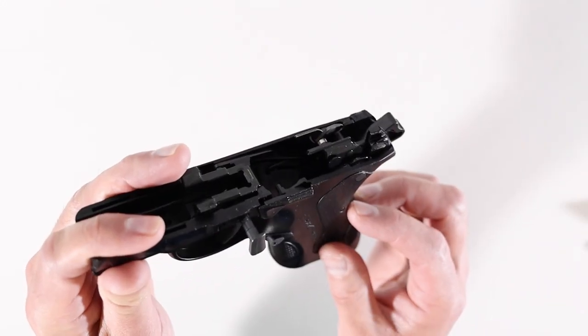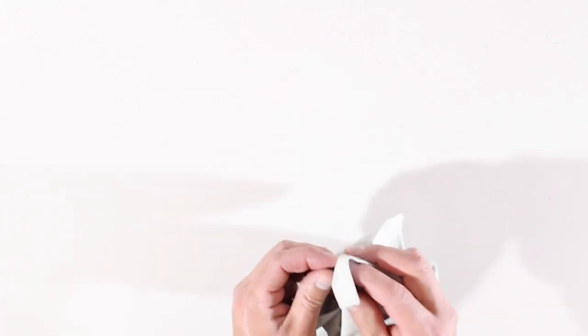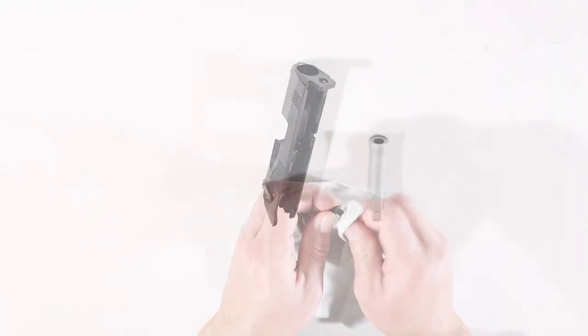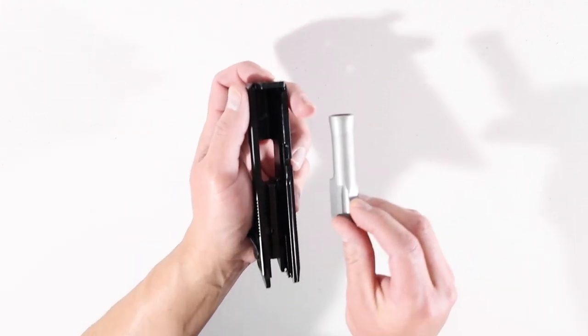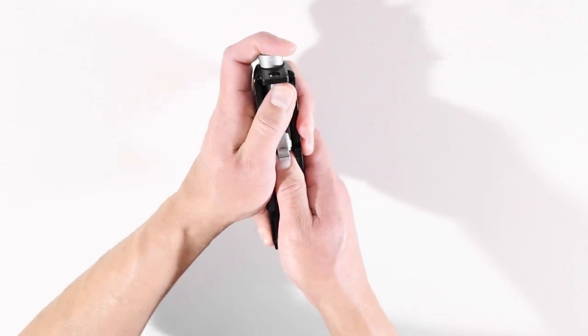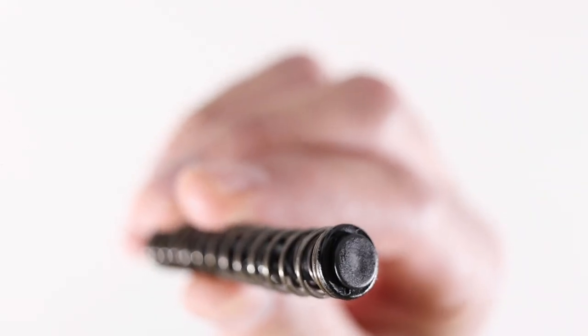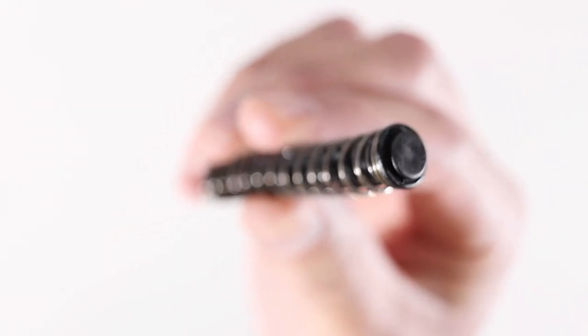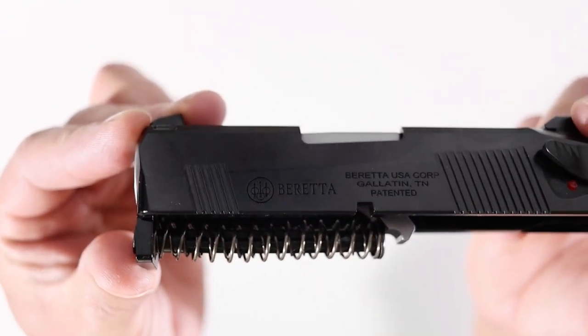Earlier, when I field stripped, the barrel was kind of hard to get out. I'm not sure how it's going to work in this case. In this case, it went back in fairly easy. Sometimes it does, sometimes it doesn't. Reinstall the recoil spring. This thing right here goes towards the muzzle end. When installed correctly, it should look just like this.